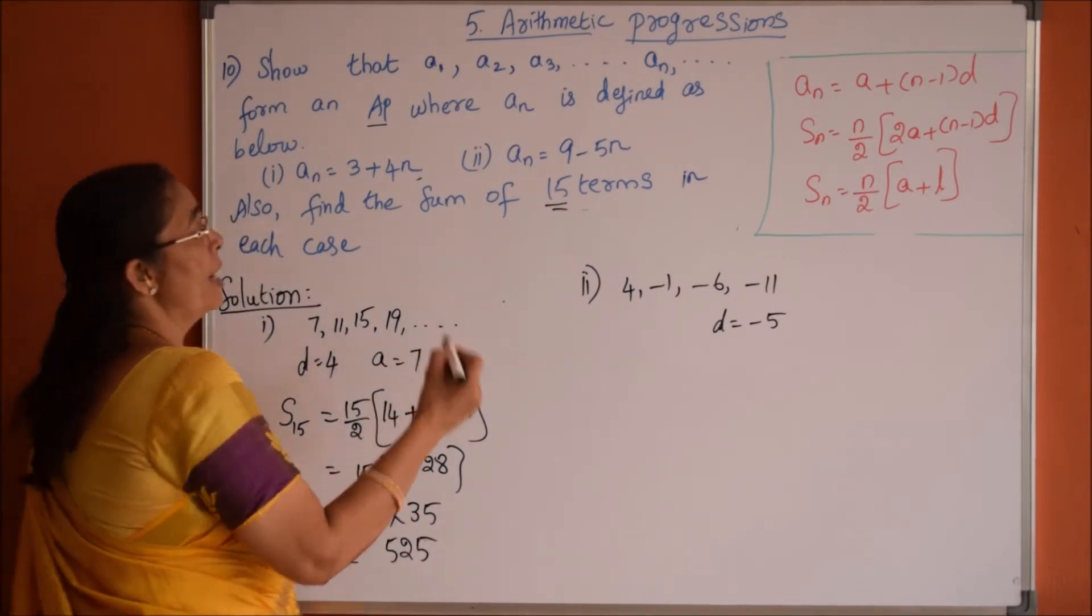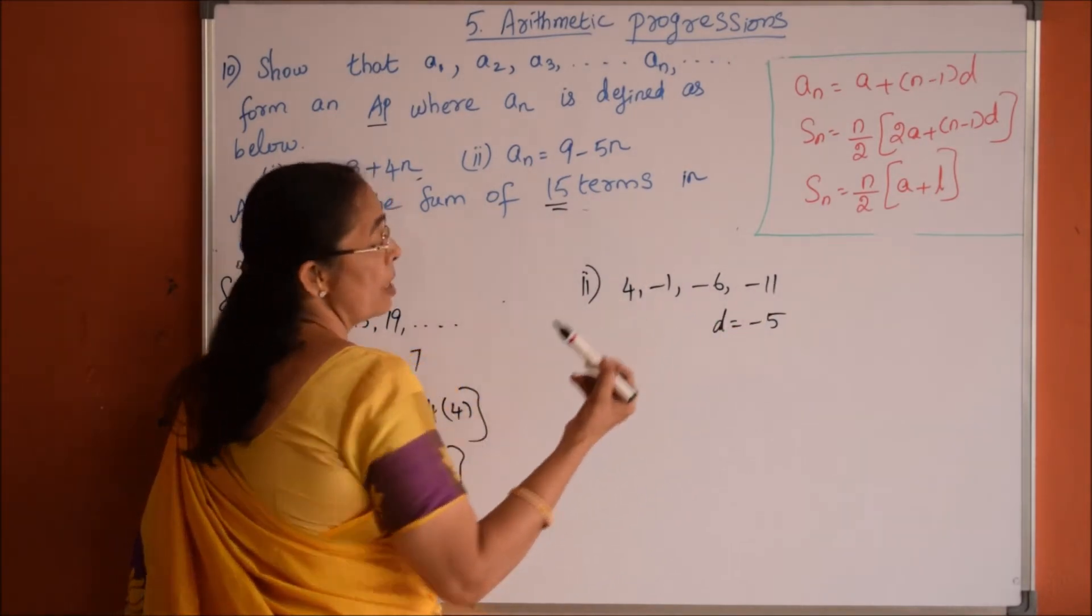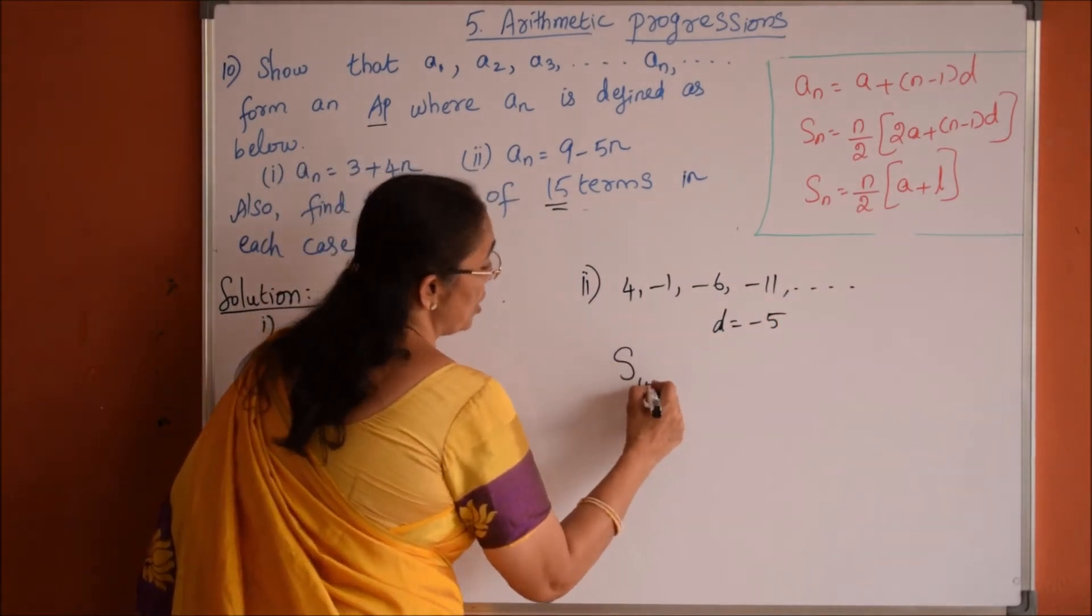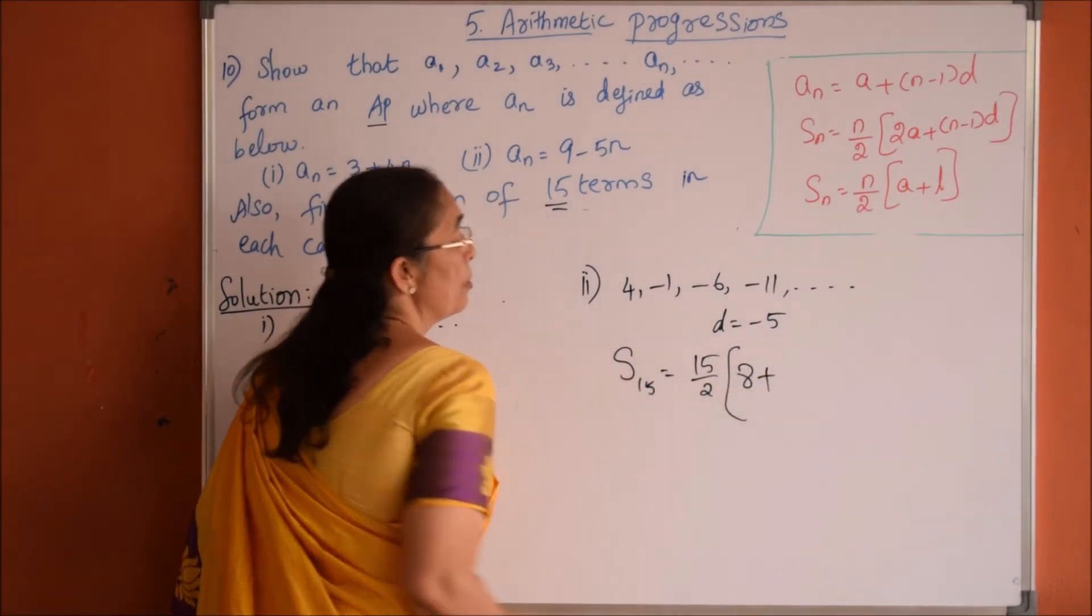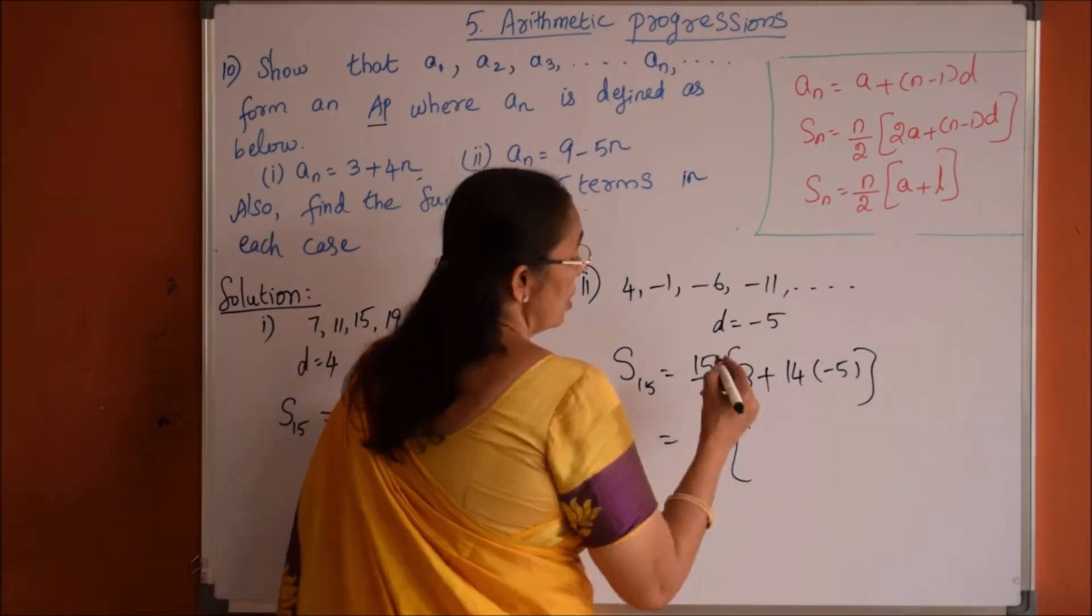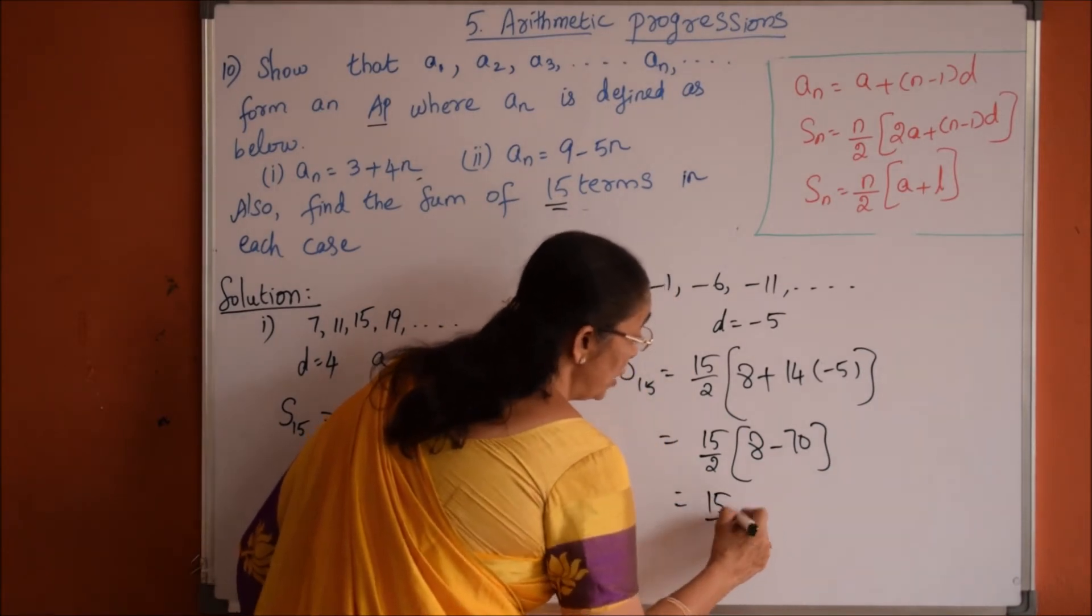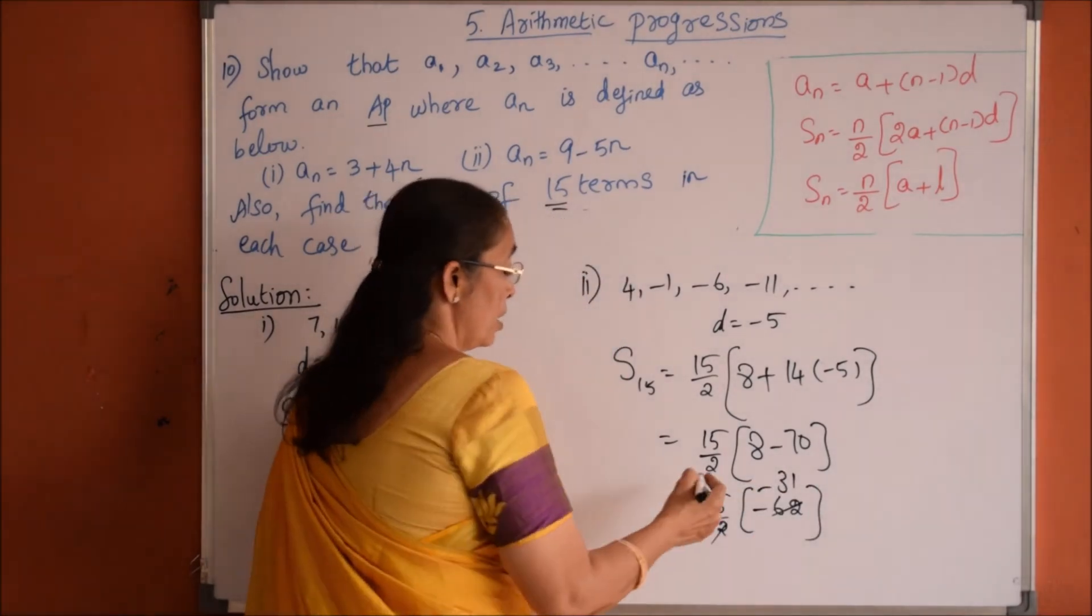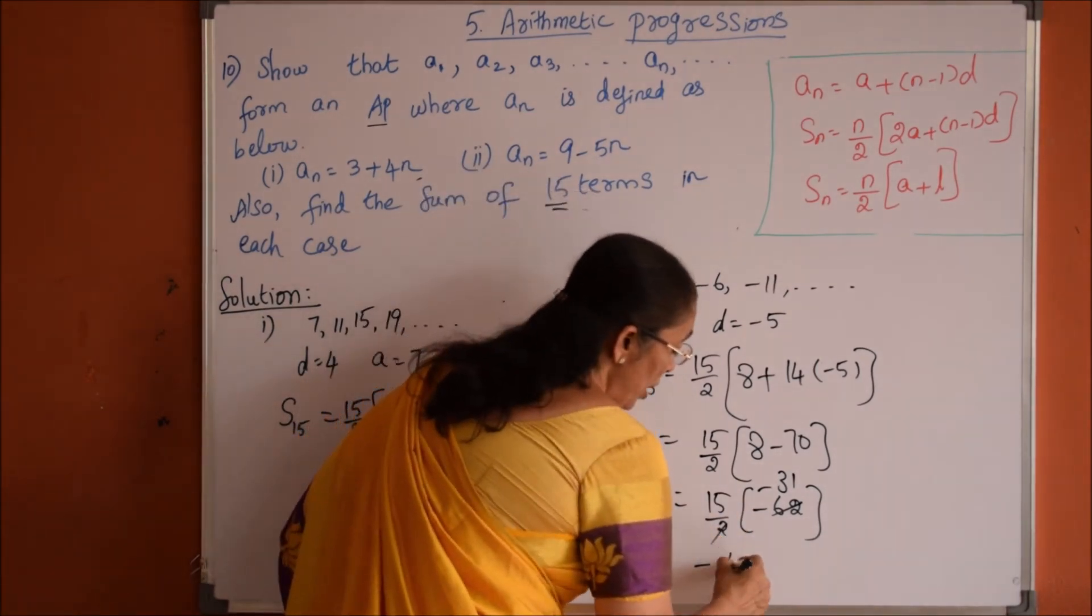Now coming to second one. So we form the list of numbers as 4 comma minus 1 comma minus 6 comma minus 11 etc. and the common difference is minus 5. So we need S_15 which is n by 2, 15 by 2 of 2a, 2 fours are 8 plus n minus 1, 15 minus 1, 14 into common difference minus 5. So this one, 8 minus 70, which is equals to 15 by 2 into minus 62. We can cancel this, minus 31. Now 15 into minus 31 will be minus 465.